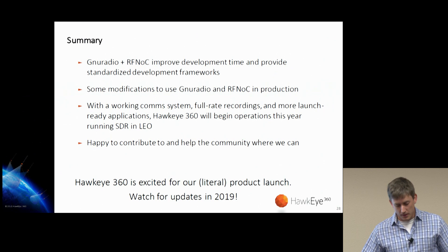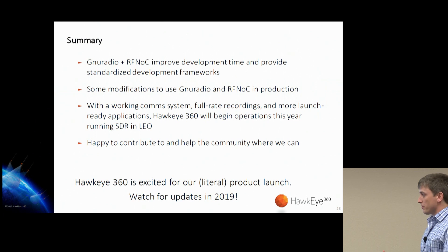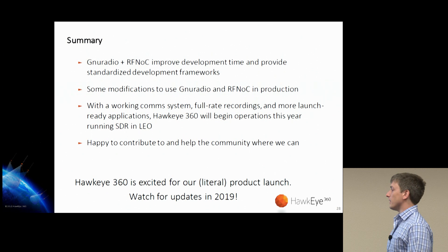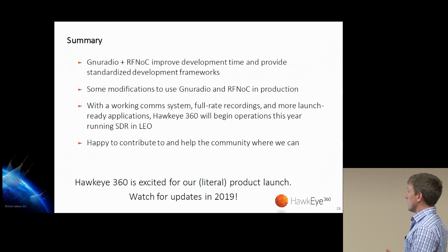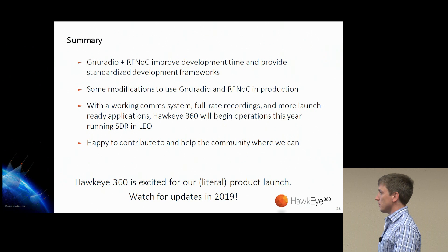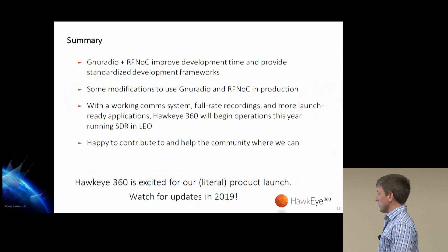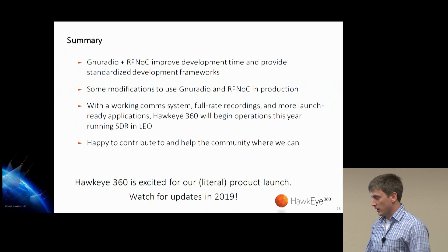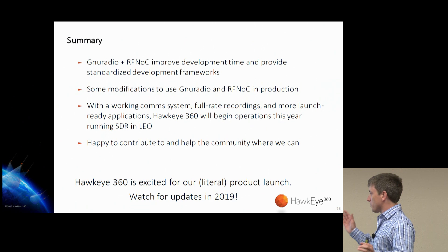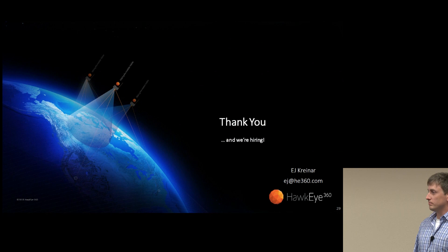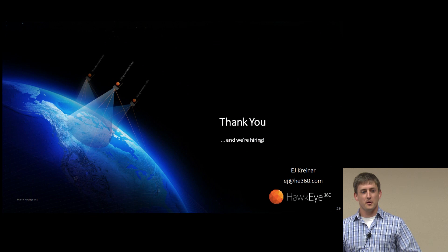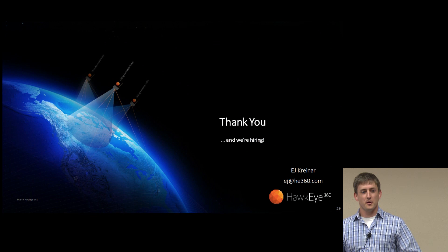To summarize: in the last couple of years, GNU Radio and RFNOC have improved our development time, provided standardization, and provided employee training. People come in with knowledge and leave with knowledge with some modifications for production use, but overall it looks similar — we're going to have flow graphs running on our satellite. We have a working comm system, full-rate recordings, and more applications. We're going to begin operating in low-Earth orbit in 2018. We have a literal product launch — watch for updates soon. We're also hiring, so come talk to us.